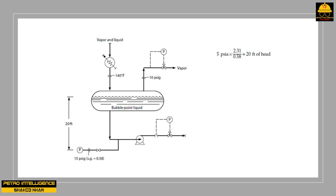Suppose we decrease the temperature of the drum from 140 to 110 degrees Fahrenheit, also cooling the liquid flowing into the suction by 30 degrees Fahrenheit. This does not provide more NPSH either. As the temperature decreases, additional lighter components dissolve in the liquid, altering its composition. The liquid will now boil not at 140°F but at 110°F, because the liquid in the drum, in equilibrium with the vapor, is at its bubble point temperature — now a cooler 110°F.